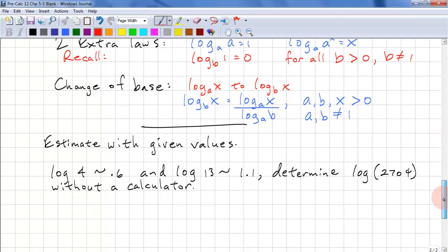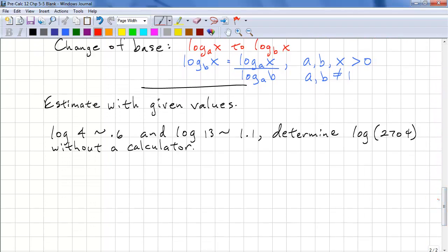One last type of question. Estimate with the given values, assuming you don't have a calculator. We're given log 4 is approximately 0.6, and log 13 is approximately 1.1. Determine the value of log 2,704 without a calculator. If you're given this log and these two values, 4 and 13 must be factors of 2,704.